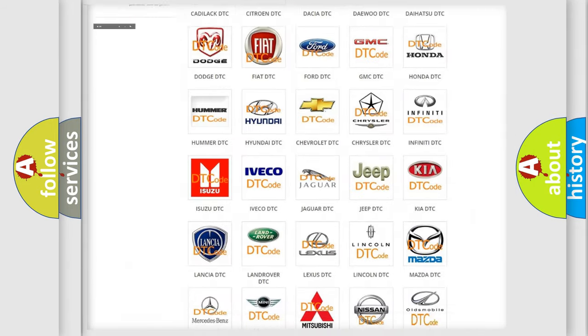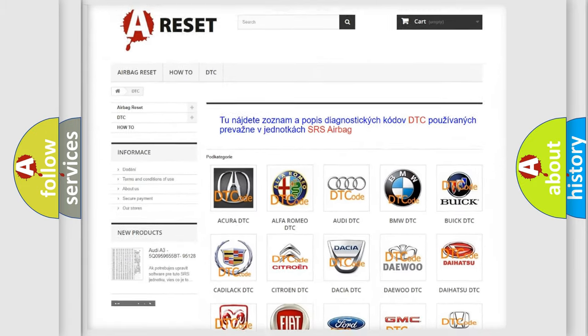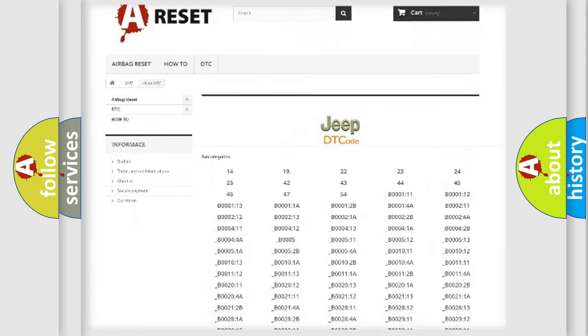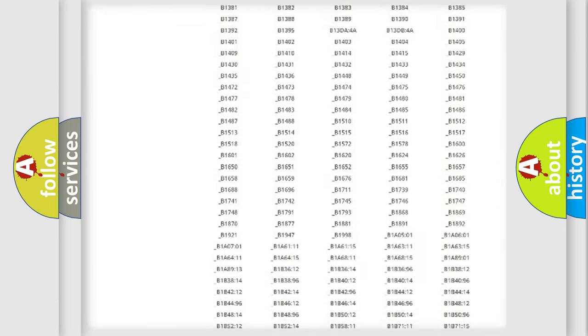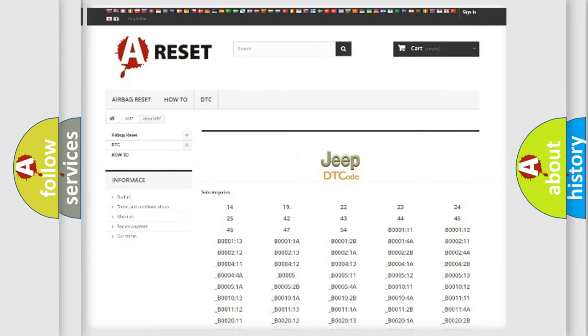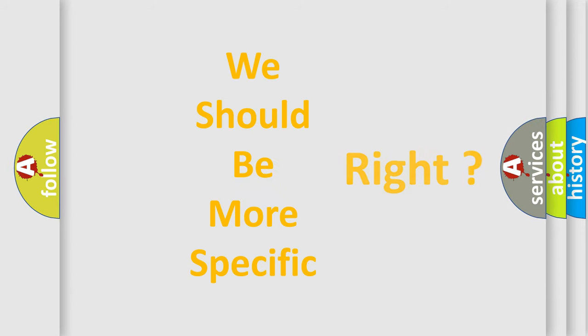Our website airbagreset.sk produces useful videos for you. You do not have to go through the OBD-2 protocol anymore to know how to troubleshoot any car breakdown. You will find all the diagnostic codes that can be diagnosed in Jeep vehicles, and many other useful things. The following demonstration will help you look into the world of software for car control units.